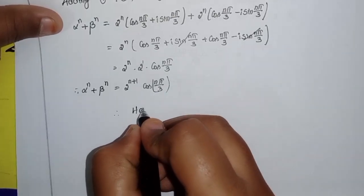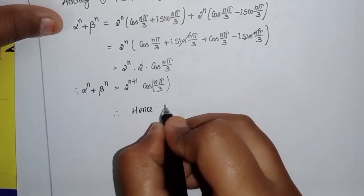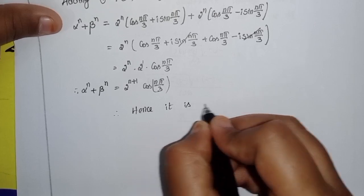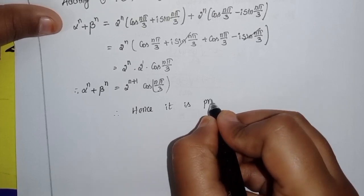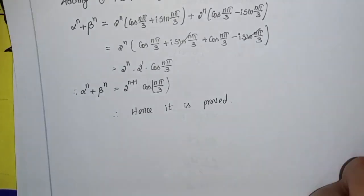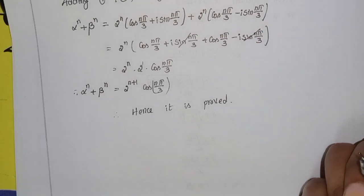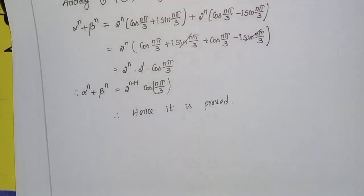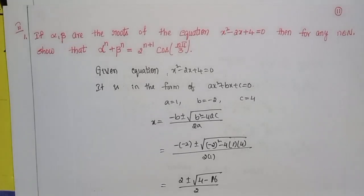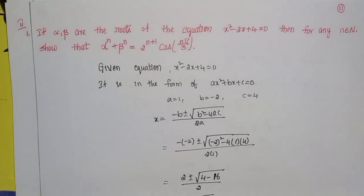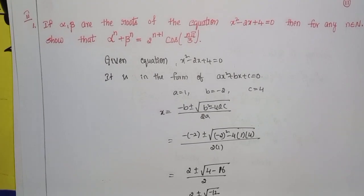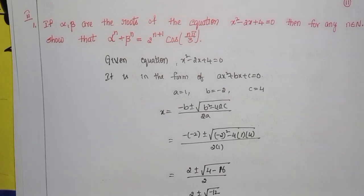Hence it is proved that alpha^n + beta^n = 2^(n+1) · cos(nπ/3). This is the solution for question number 1. If you have any doubt, please comment. If you like my video, please like, share, and subscribe. Thank you for watching. Take care.